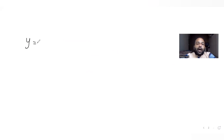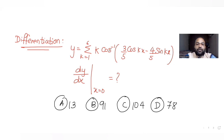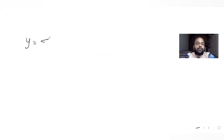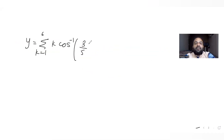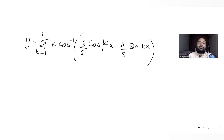Let's solve this. We have y as summation of k equal to 1 to 6, k cos inverse of (3/5 cos kx minus 4/5 sin kx). Since cos inverse is present, I'll try to write the entire expression in terms of cos.